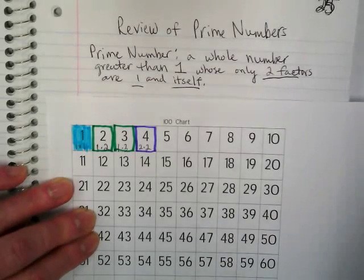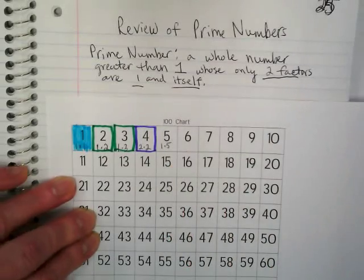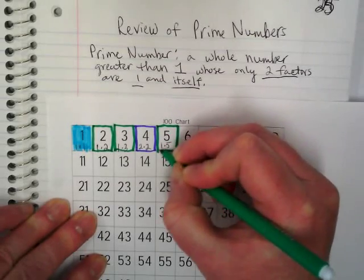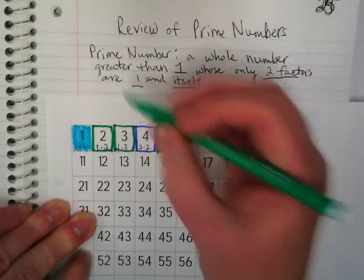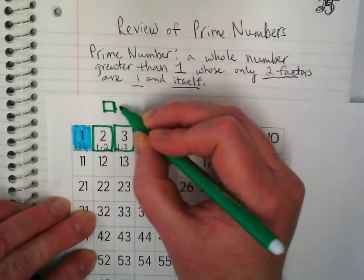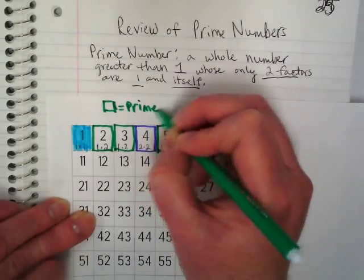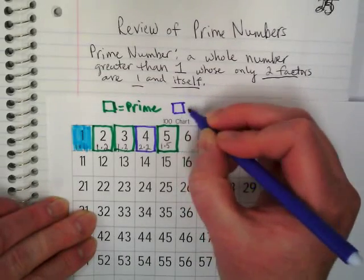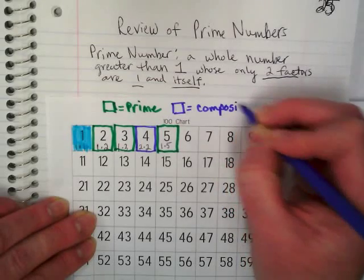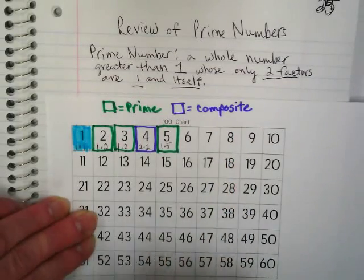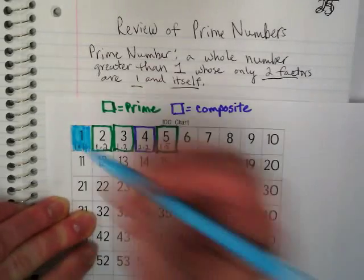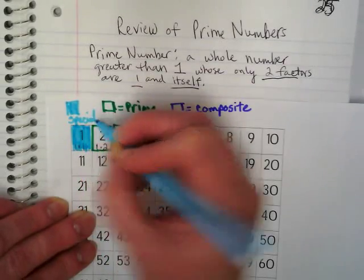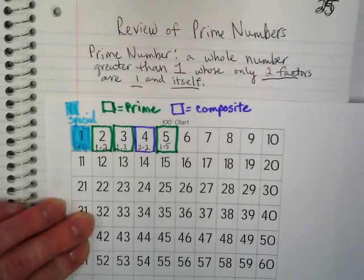What about the number five? I can only get five by multiplying one times five or five times one, so it is prime. Let's make a little key: a box in green equals prime, and a box in purple is what we call composite — it's made up of more than one way to multiply and get it. And this color is for the special number one, which is not prime or composite. Let's keep going.